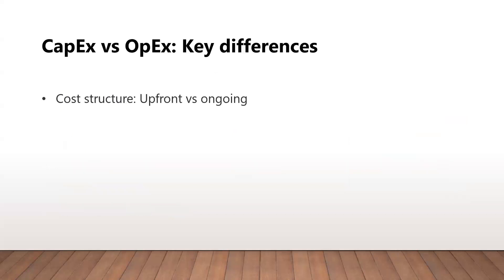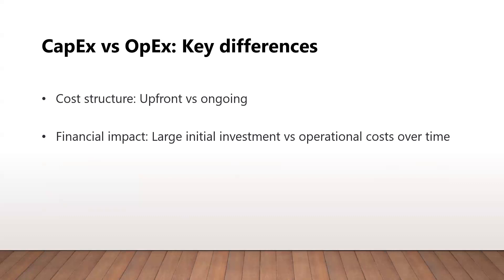Let's summarize by comparing both models. When it comes to cost structure, CAPEX has significant upfront cost, whereas OPEX doesn't have any upfront cost. OPEX does have ongoing cost based on the amount of usage, whereas CAPEX has low ongoing costs in terms of maintenance. As CAPEX requires a large initial investment, it has a significant impact on your finances, whereas OPEX spreads this cost over time, so there is not a major impact on cost at once.